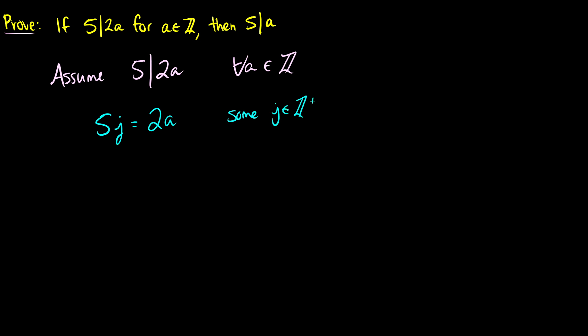So what do we know here? We know 5 times j equals 2 times a, but what is special about 2 times a? Well this is even. We know this is even. Now we have a 5 here and 5 is odd, so how do we make 5 times something even? Well this means that j has to be even.